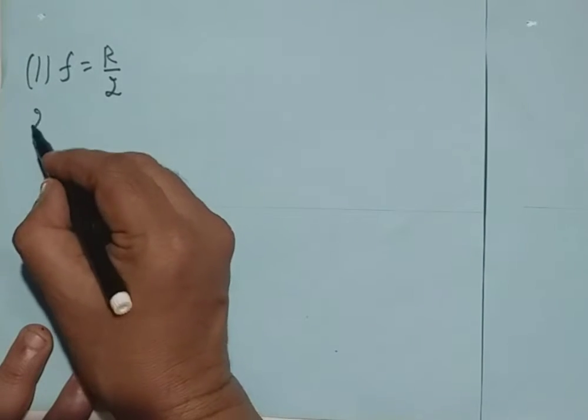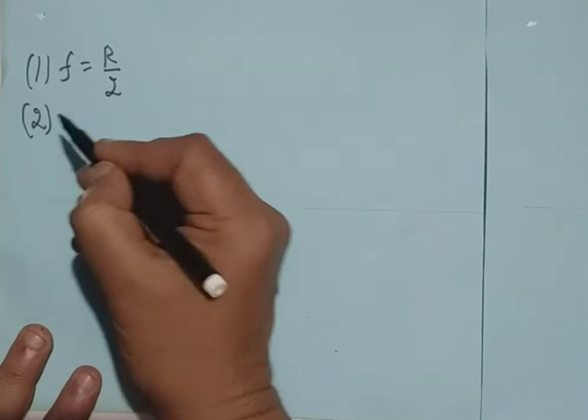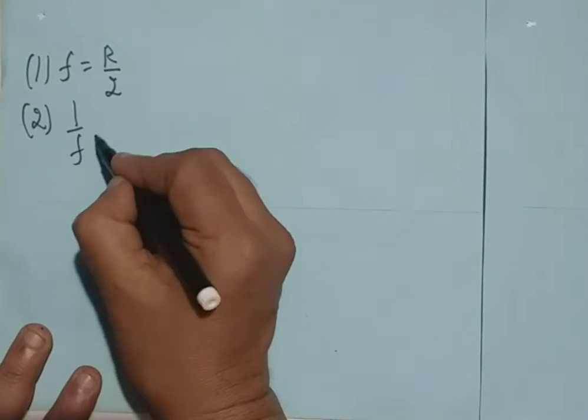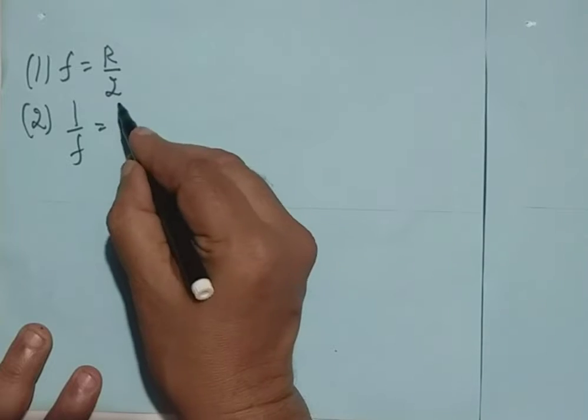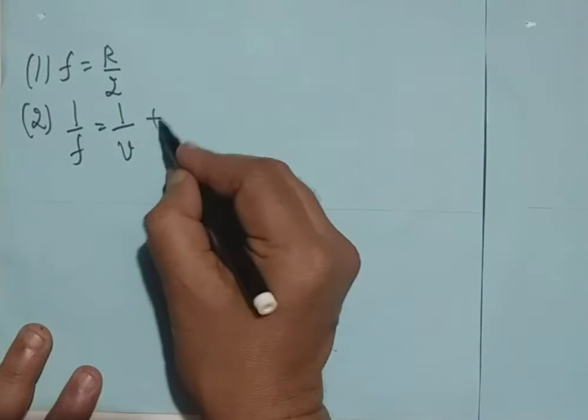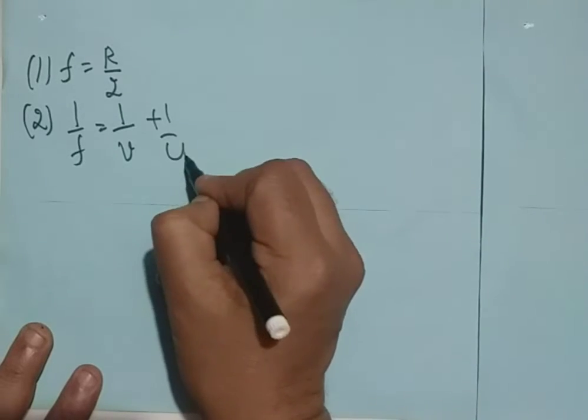The second formula what we learnt is the mirror equation: 1 by F equals 1 by V plus 1 by U.